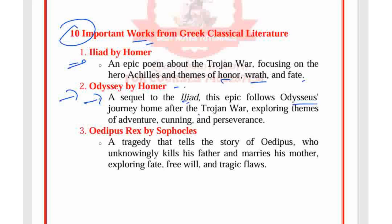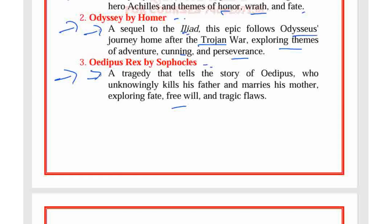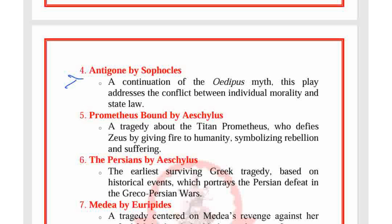The Odyssey explores themes of adventure, cunning, and perseverance. Oedipus Rex by Sophocles is a tragedy that tells the story of Oedipus, who unknowingly kills his father and marries his mother, exploring fate, free will, and tragic flaws. Antigone, also by Sophocles, is a continuation of the Oedipus myth and addresses the conflict between individual morality and state law.